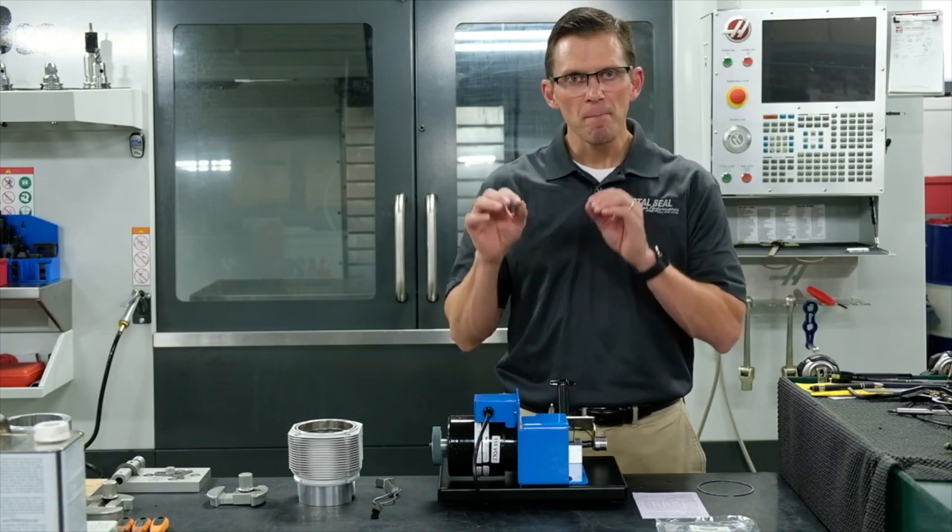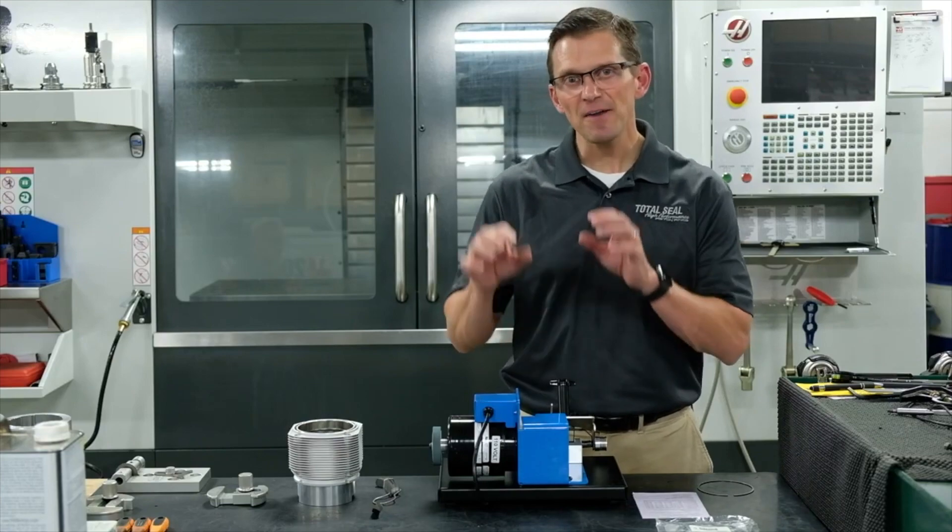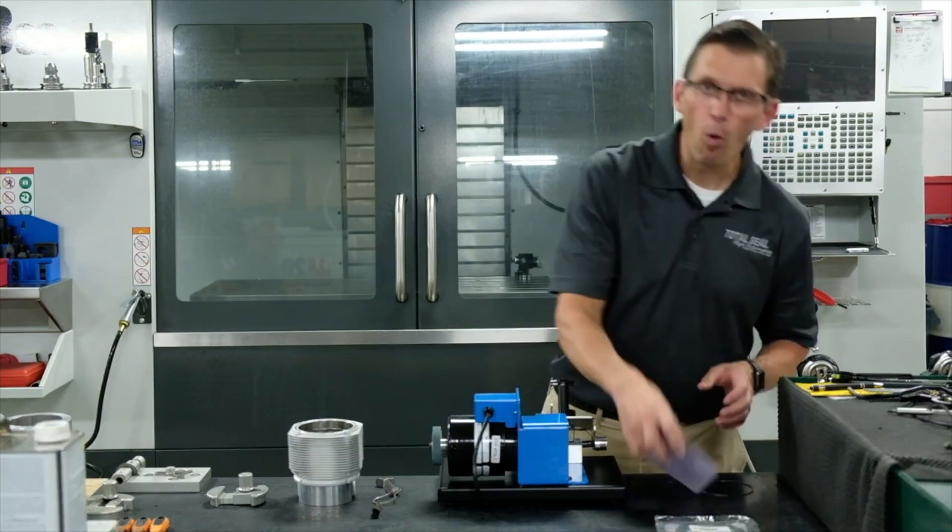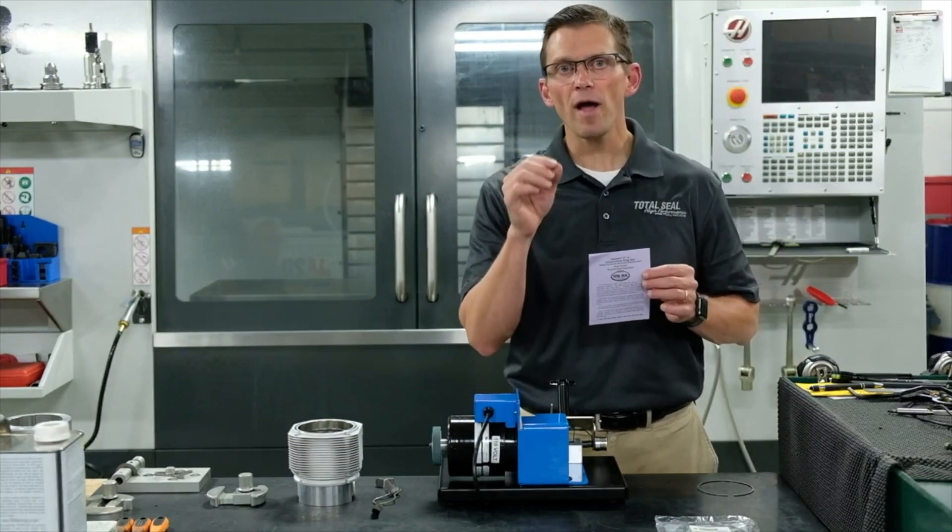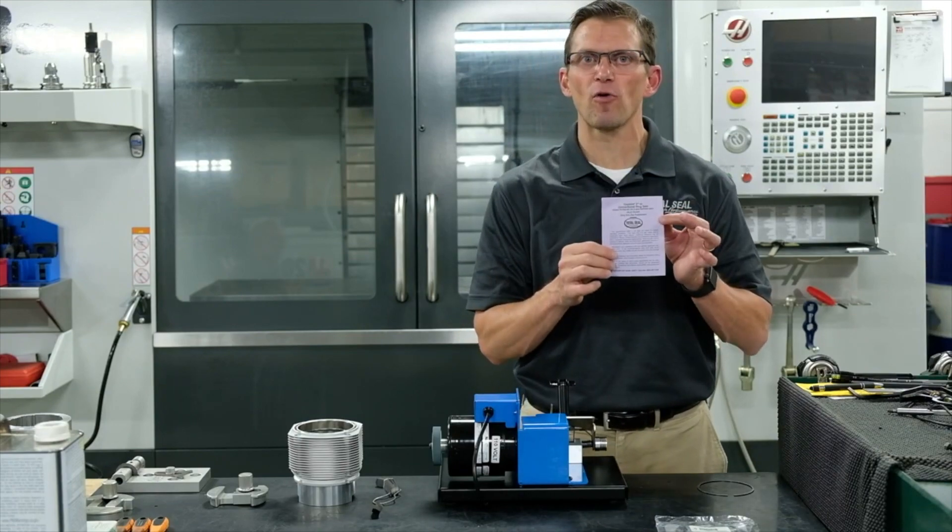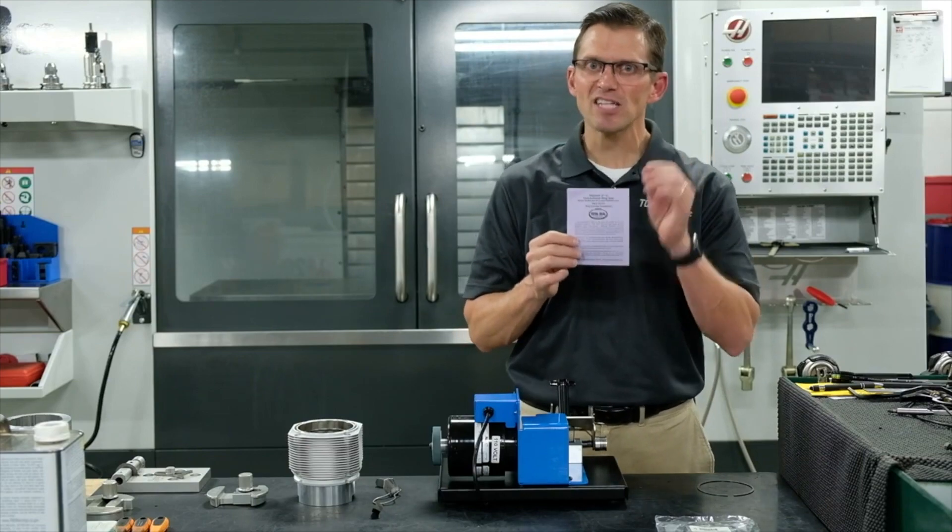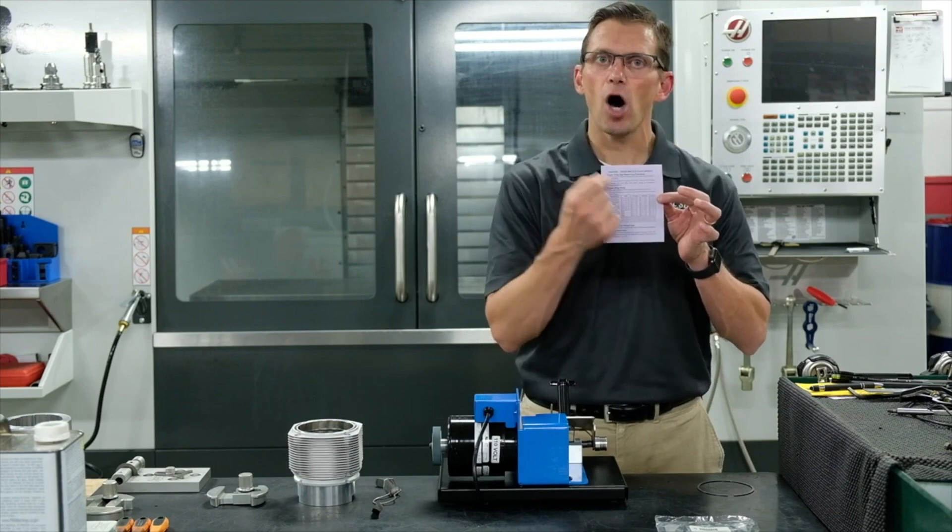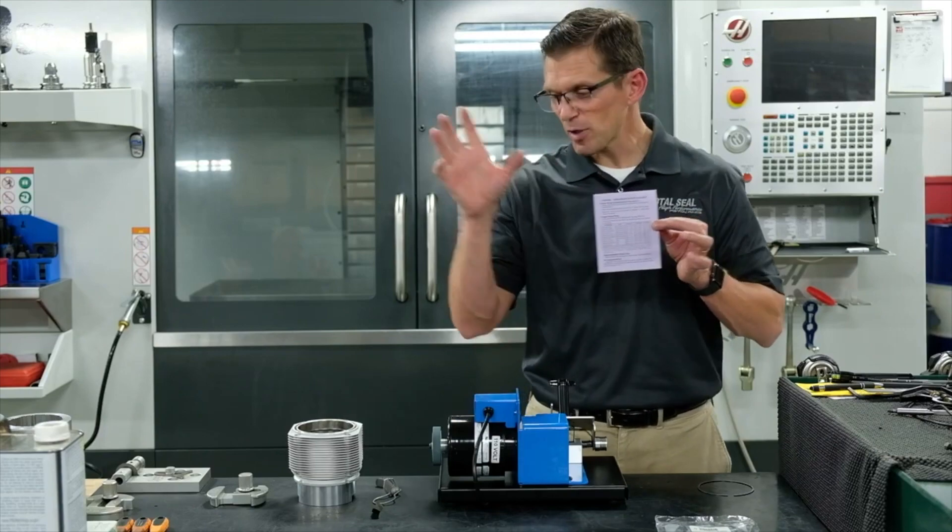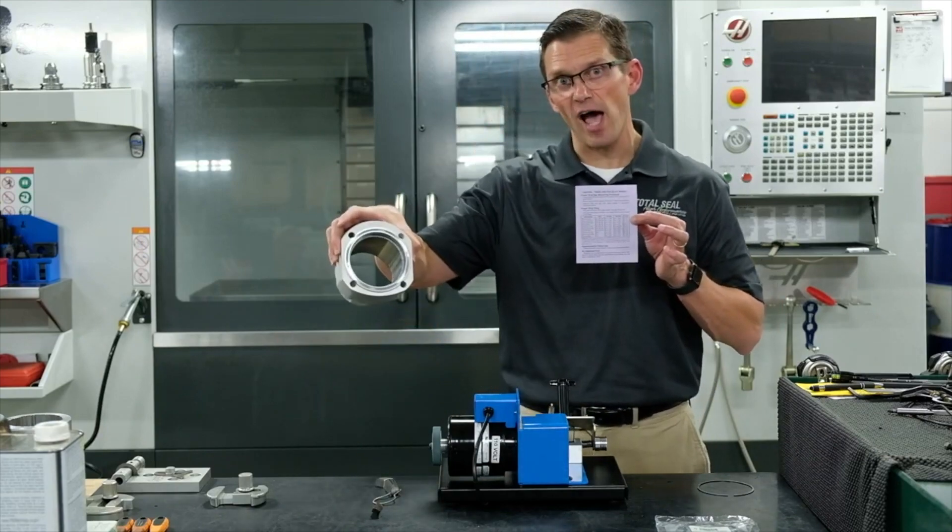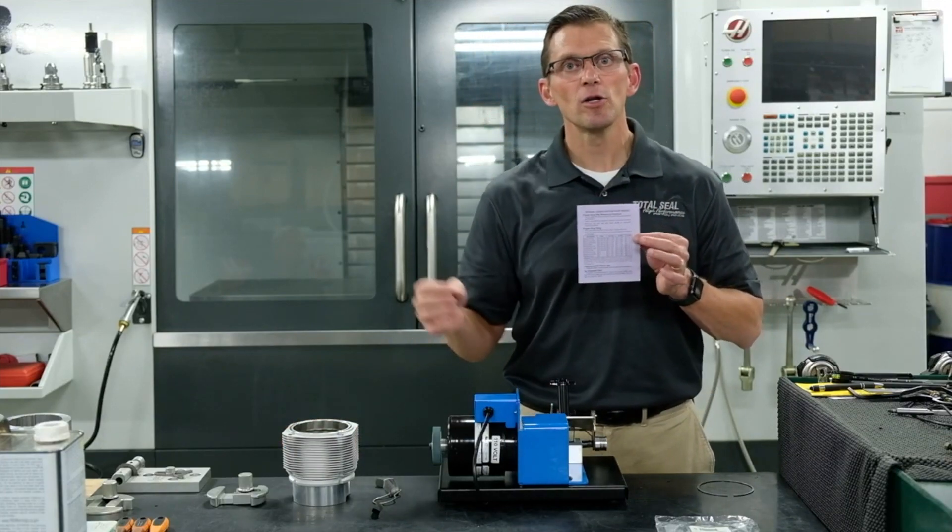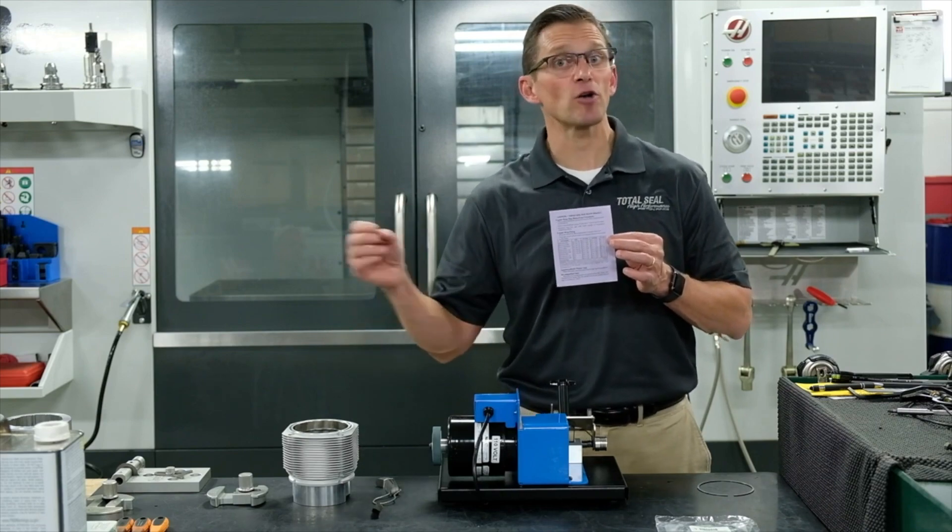We're going to talk about piston ring end gap and how to file fit a ring in this video. The most important thing to know in terms of determining what is the proper ring end gap for your application is that we've already done the homework for you. In this booklet that comes with each set of rings, it actually lists all the correct calculations to get the correct end gap. What you want to do is take your bore size and multiply it by the factor to determine the ring end gap that's correct for your application.